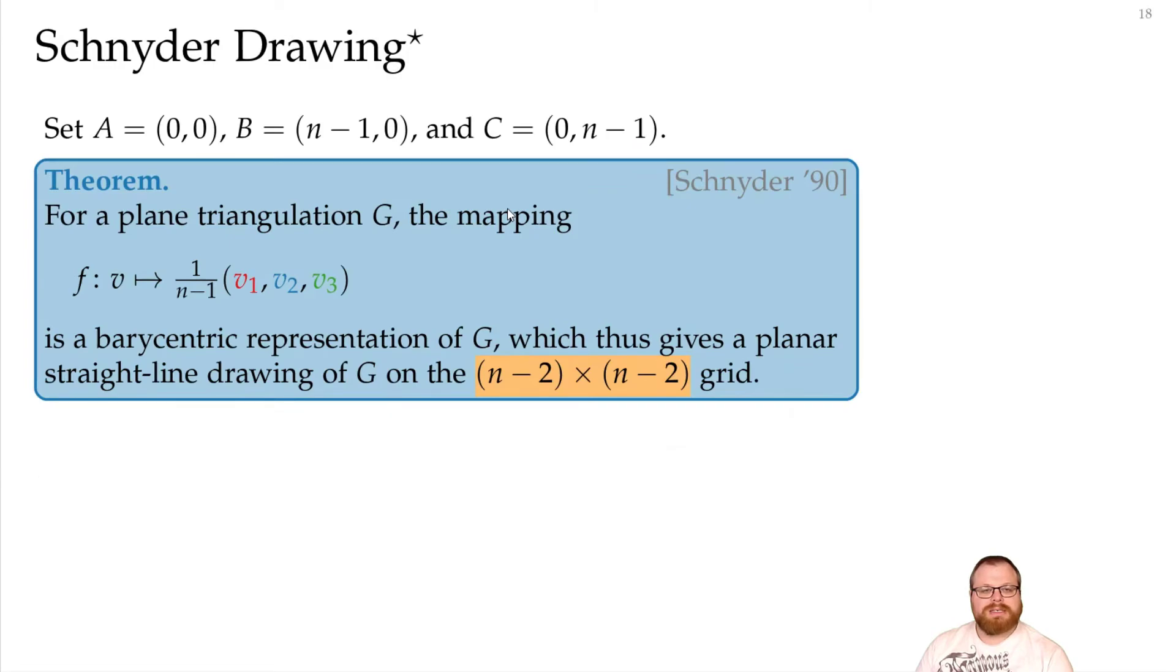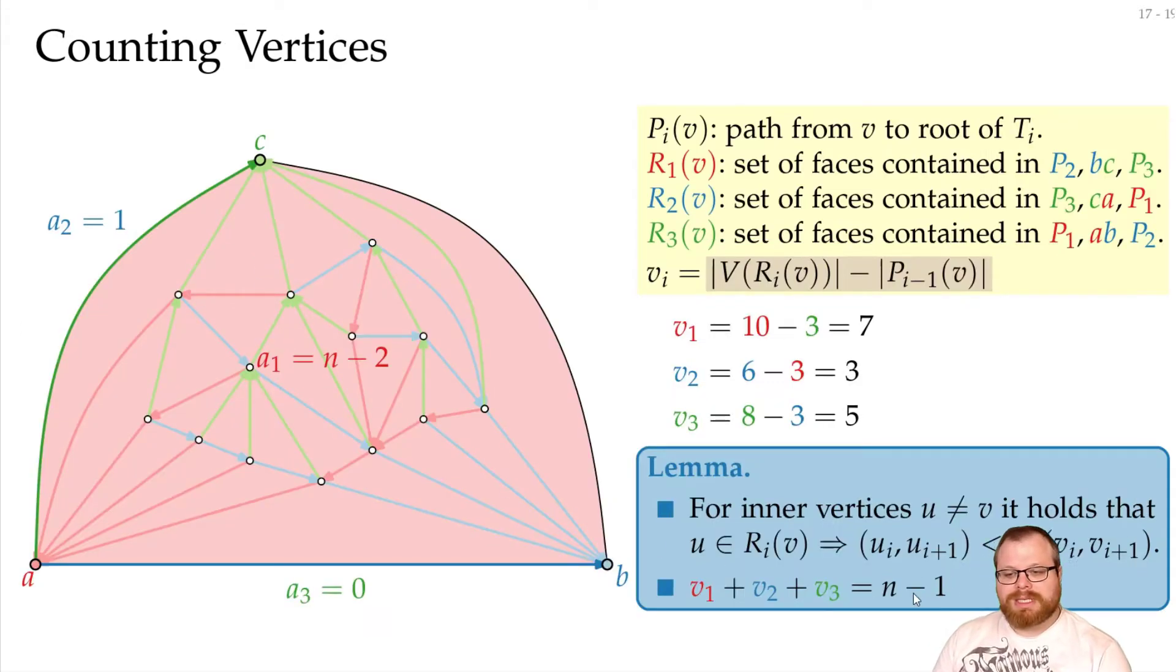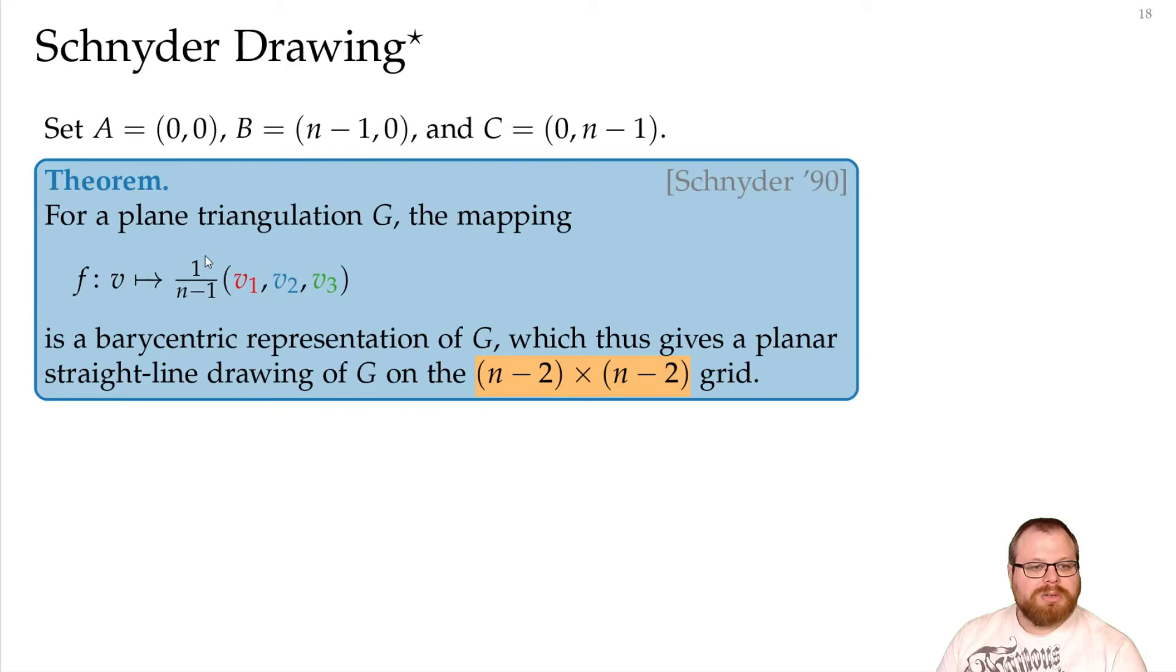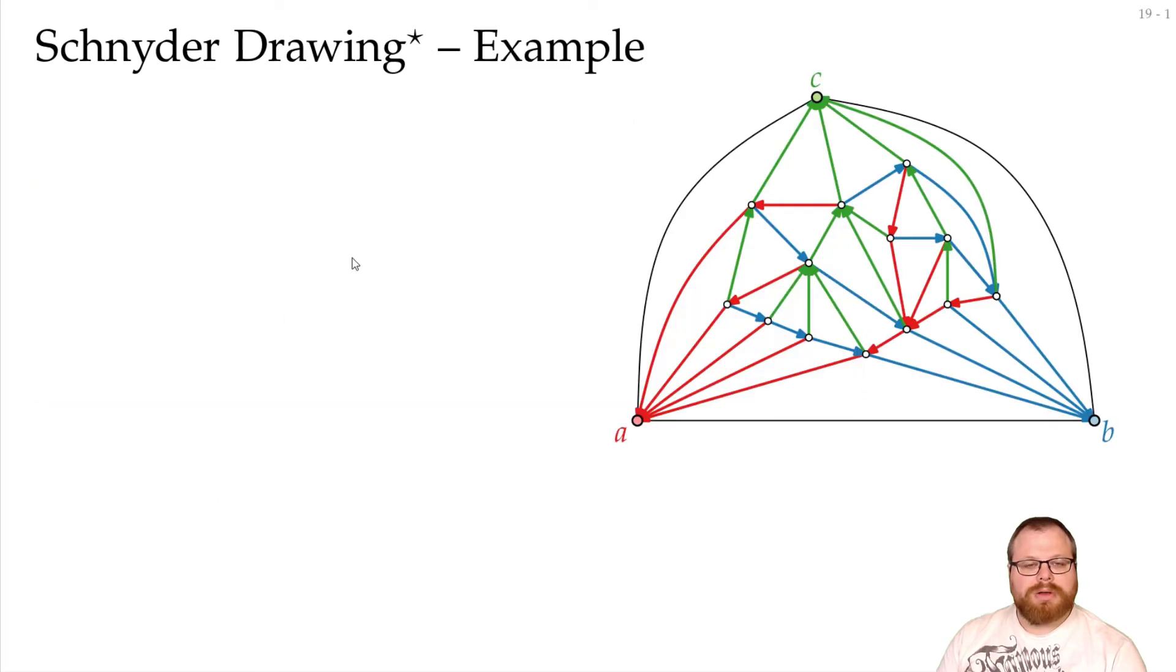That now defines us the improved Schnyder drawings, where we get to the (n-2) times (n-2) grid. So we set again a to be (0,0), b to be now (n-1, 0), and c to be (0, n-1). We take these three numbers, we know they sum up to exactly n minus 1, so we can divide them by n minus 1. This gives us the barycentric coordinates, and we can draw the whole thing.